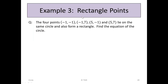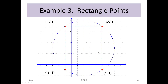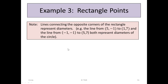Example 3: Rectangle points. The four points (-1, -1), (-1, 7), (5, -1), and (5, 7) lie on the same circle and form a rectangle. Find the equation of the circle. Since they form a rectangle, each angle is a right angle. Lines connecting the opposite corners of the rectangle represent diameters — for example, from (5, -1) to (-1, 7), and from (-1, -1) to (5, 7).